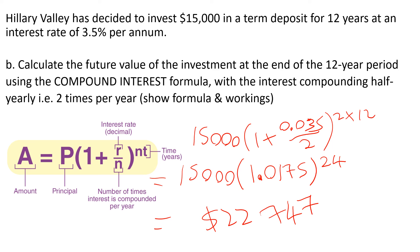If we wanted to calculate our interest, we would just minus the original principle to work out what our return is in terms of the interest, which would equal 7,747. I hope that helps.